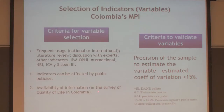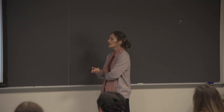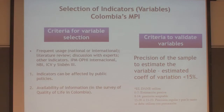They also used the coefficient of variation to check that the variables were valid in the sample. For them, less than 15% is acceptable — beyond that, there's a gray area. So this is a technical criteria, this a policy criteria, this a data criteria, and this is a rigor/academic literature criteria.